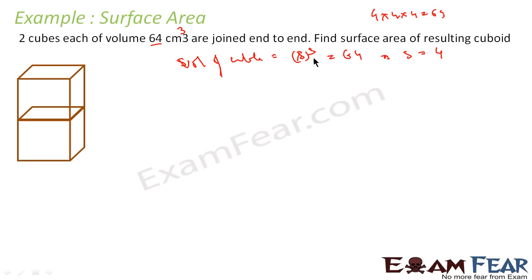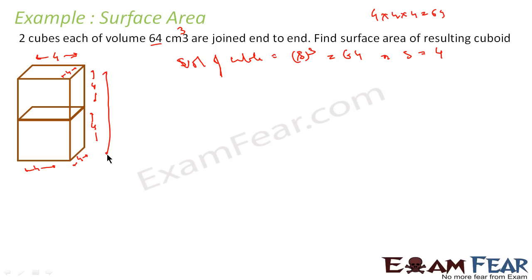So each cube has side 4 cm. When the two cubes are joined end to end, the resulting cuboid has length = 8 cm, breadth = 4 cm, and height = 4 cm.